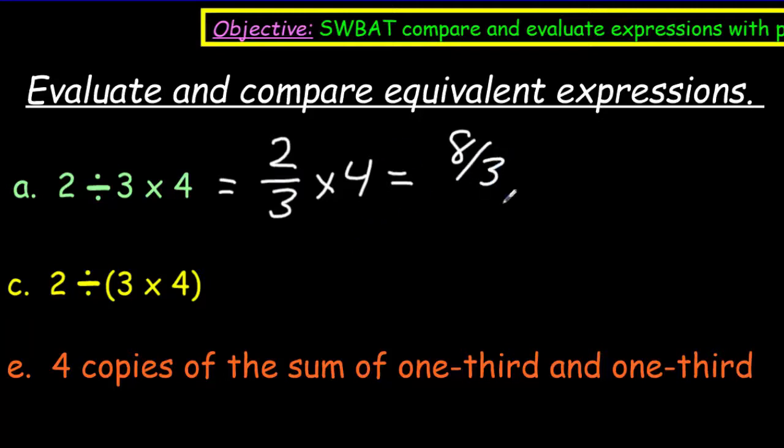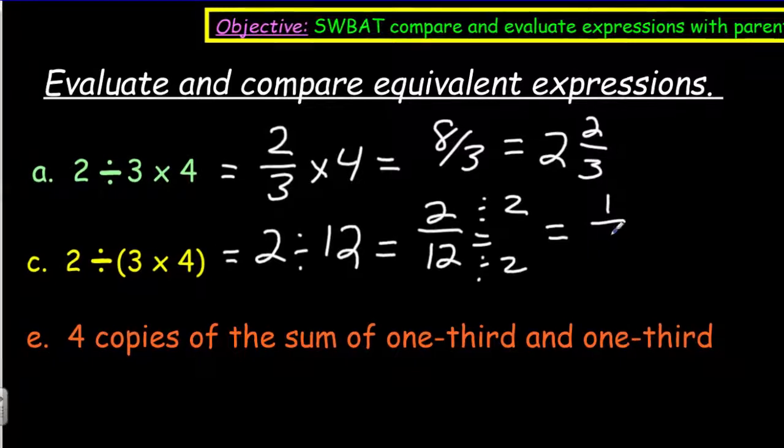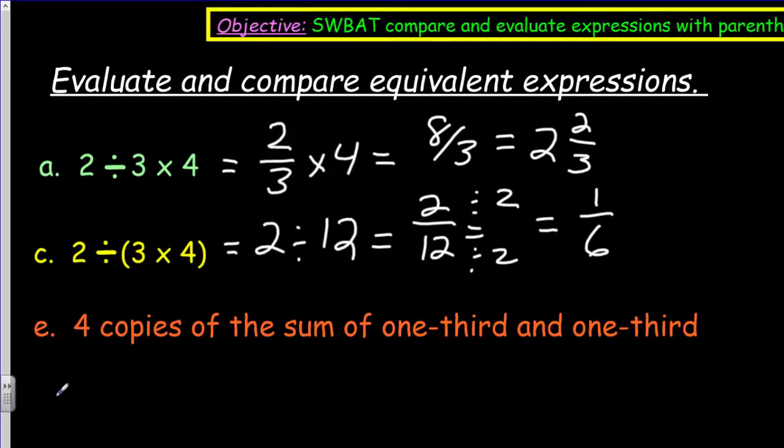This would really be two divided by three times four, which then would equal eight-thirds. That number seems so familiar. Or, we already know, two and two-thirds. These are the same numbers. Oh, parentheses, though. Different. So now I have to do this as two divided by, I have to do it in parentheses first, and I get 12. Two divided by 12, and if I divide out by two, I'm going to get one-sixth.